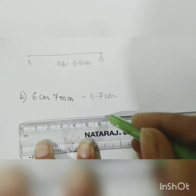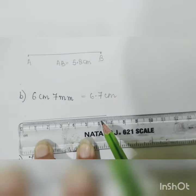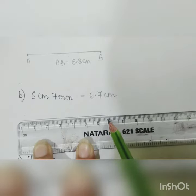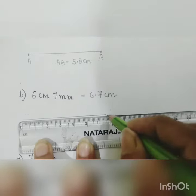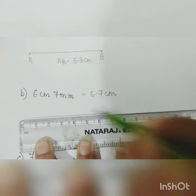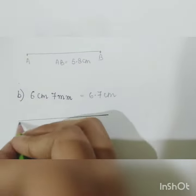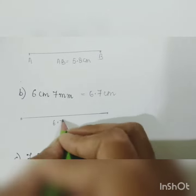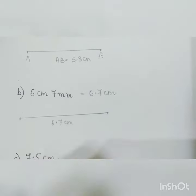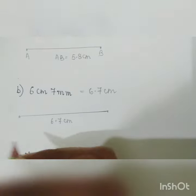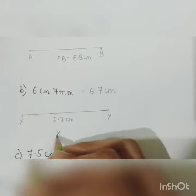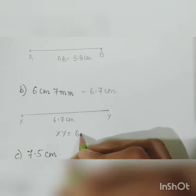This is your 6 and see: 1, 2, 3, 4, 5, 6, and 7 is here, two more lines. Now this is your 6.7 centimeter. We can name them as XY. So we can say that XY is equal to 6.7 centimeter.